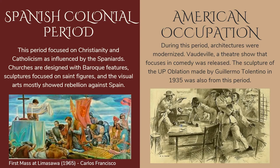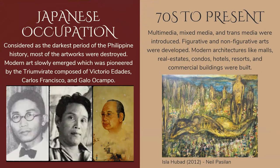Then we have the Japanese occupation. This is considered as the darkest period of Philippine history, because most of the artworks were destroyed. Modern art slowly emerged, pioneered by the triumvirate composed of Victoria Idades, Carlos Francisco, and Galo Campo. Then we have the 70s to present. During this time, multimedia, mixed media, and transmedia were introduced. Figurative and non-figurative arts were developed. Modern architectures like malls, real estates, condos, hotels, resorts, and commercial buildings were also built.